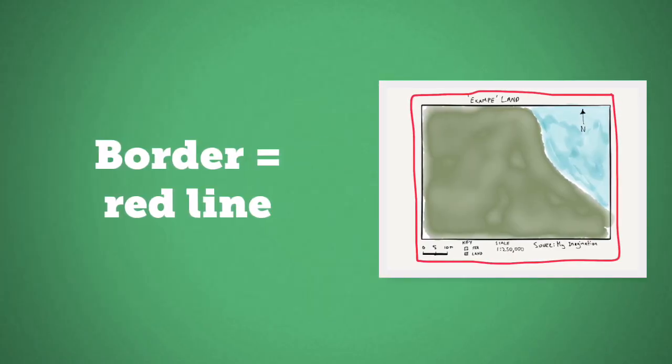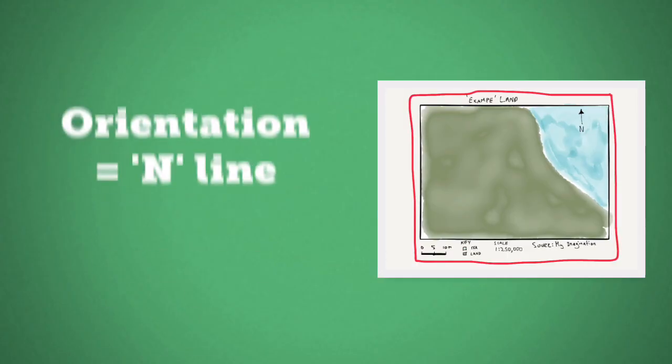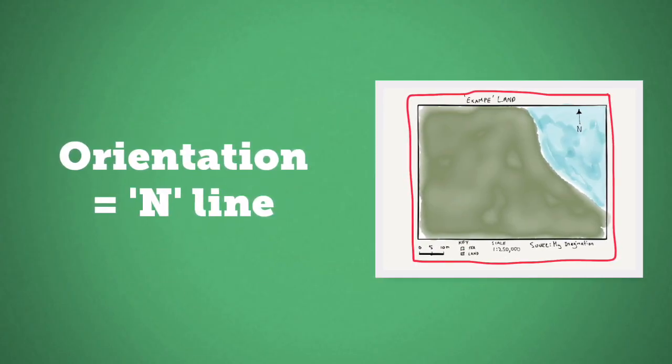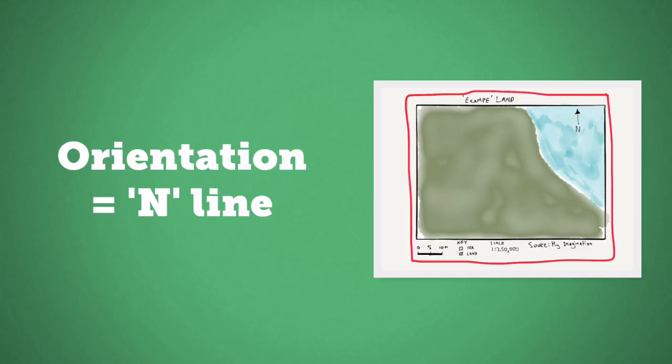Here the B means border which is that red line around everything. The O is orientation which we can see in the top right corner with the arrow telling us where north is.